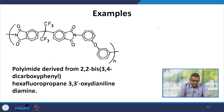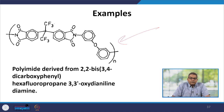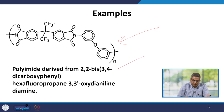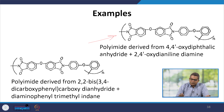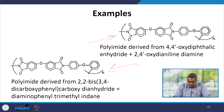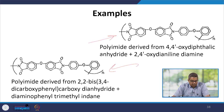Additional structural examples include polyimides derived from 2,2,3,4-dicarboxyphenyl hexafluoropropane dianhydride with oxydianiline diamine, polyimides from 4,4-oxydiethylic anhydride with 2,4-oxydiamine, and polyimides derived from 2,2,3,4-dicarboxyphenyl carbonyl dianhydride with diaminophenyl trimethylindane.